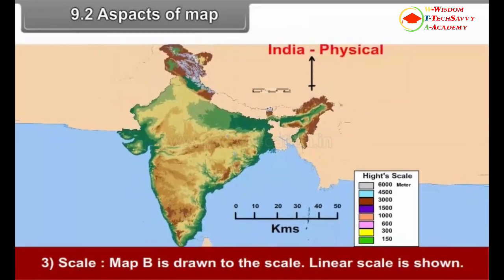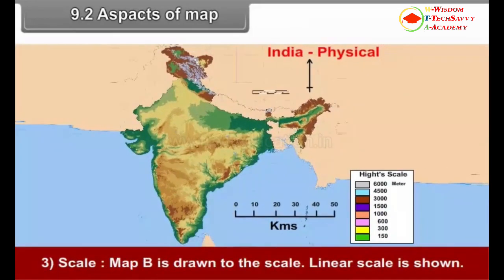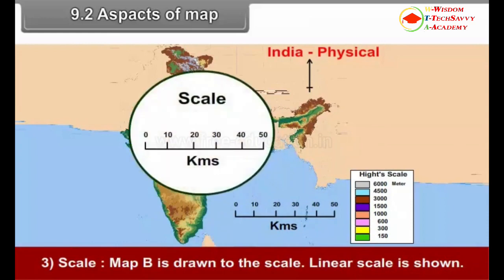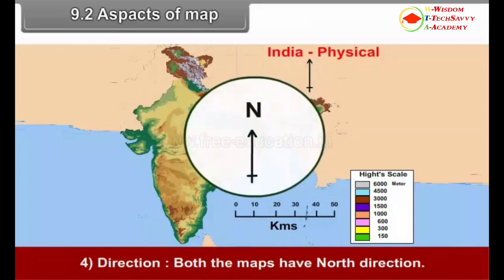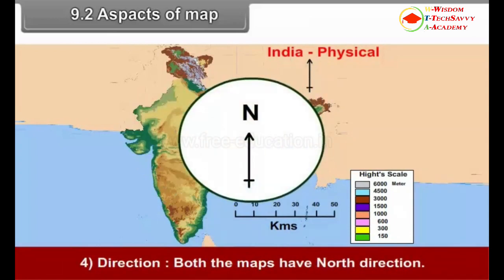Third, Scale: Map B is drawn to scale and a linear scale is shown. Fourth, Direction: Both maps have no direction indicated.